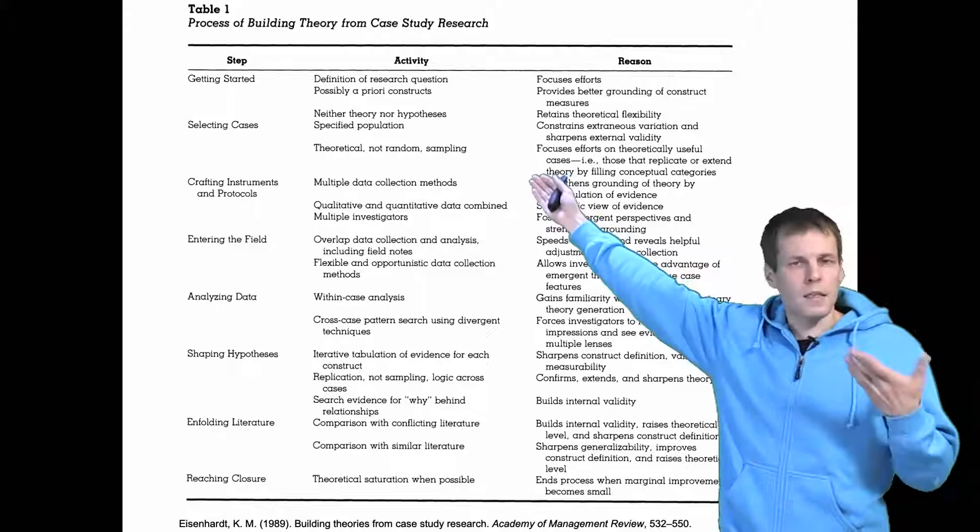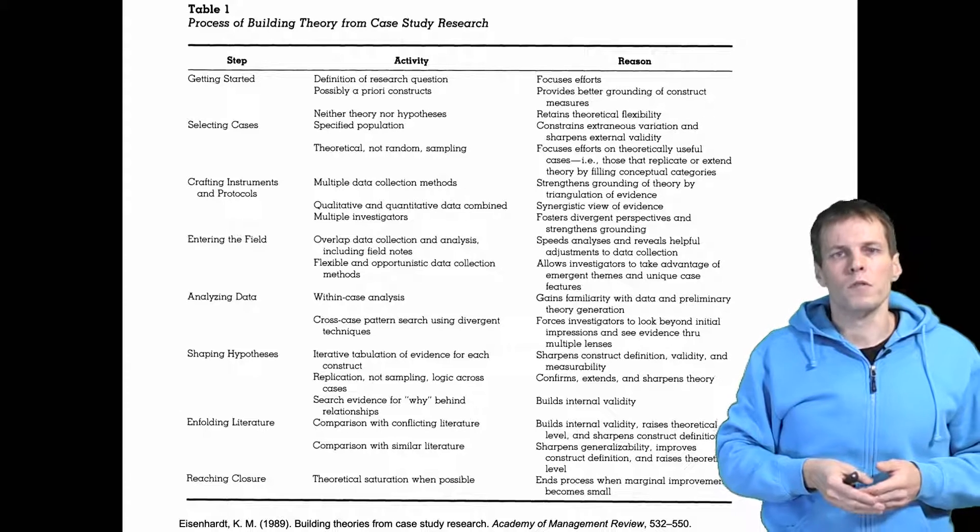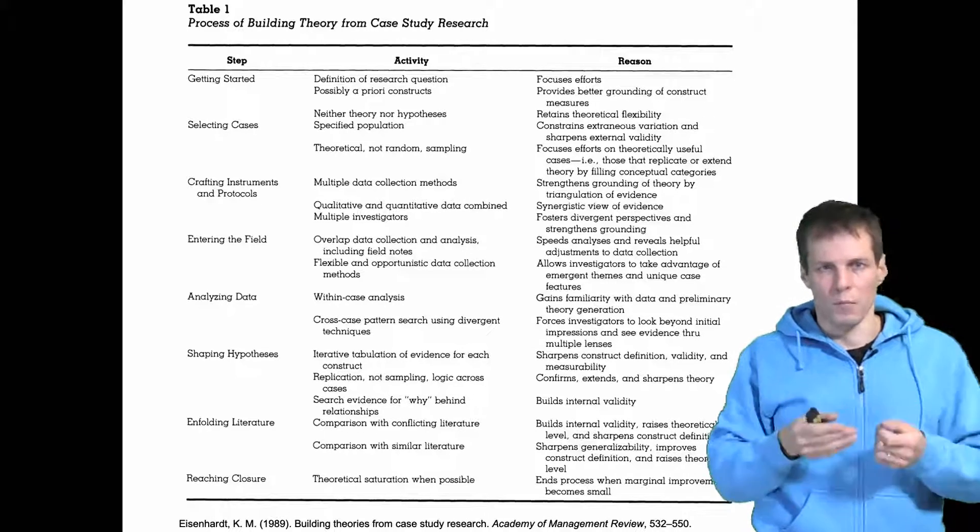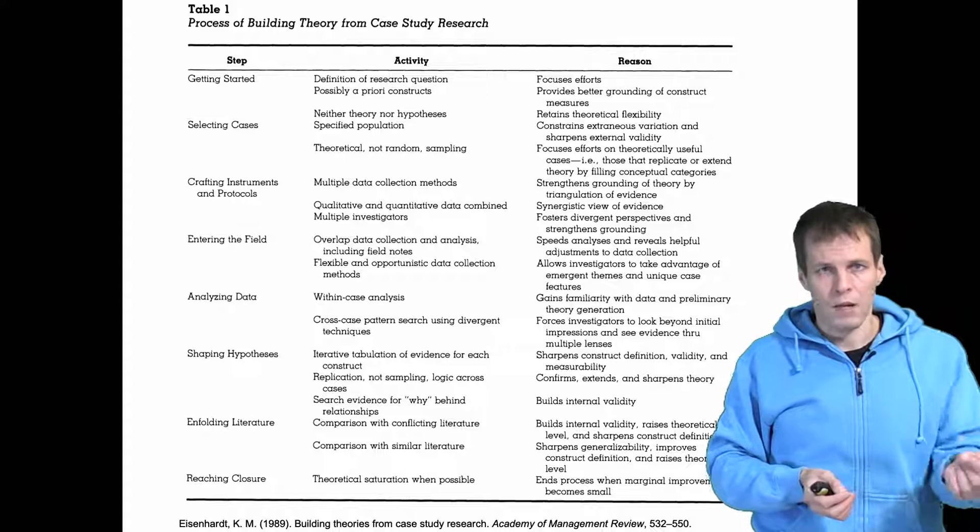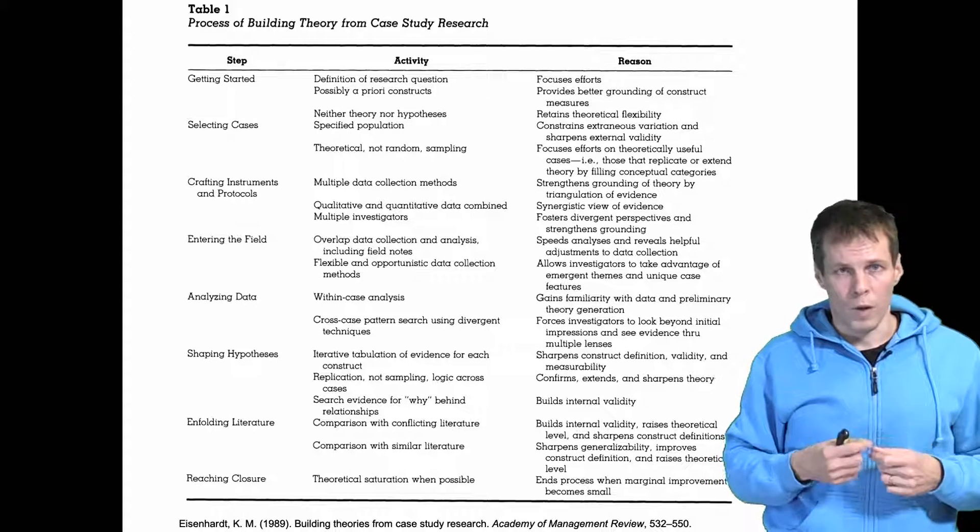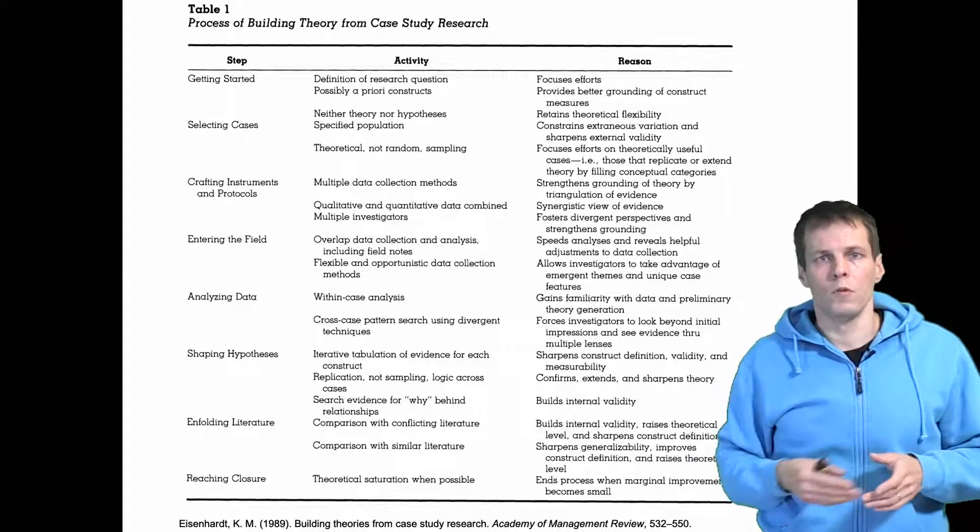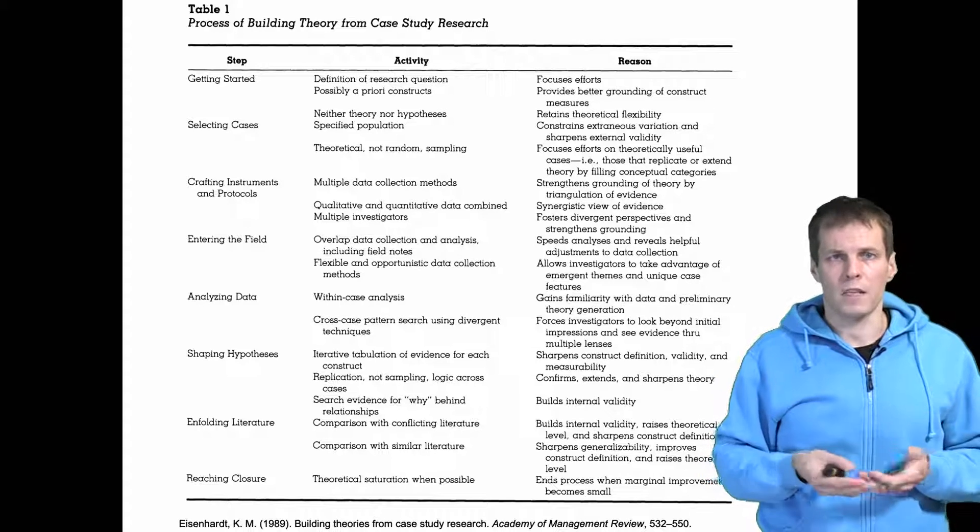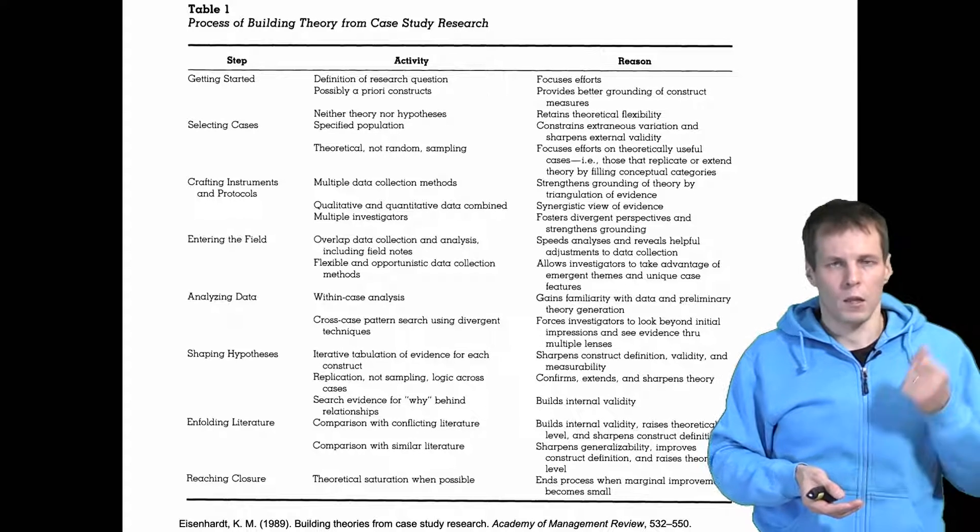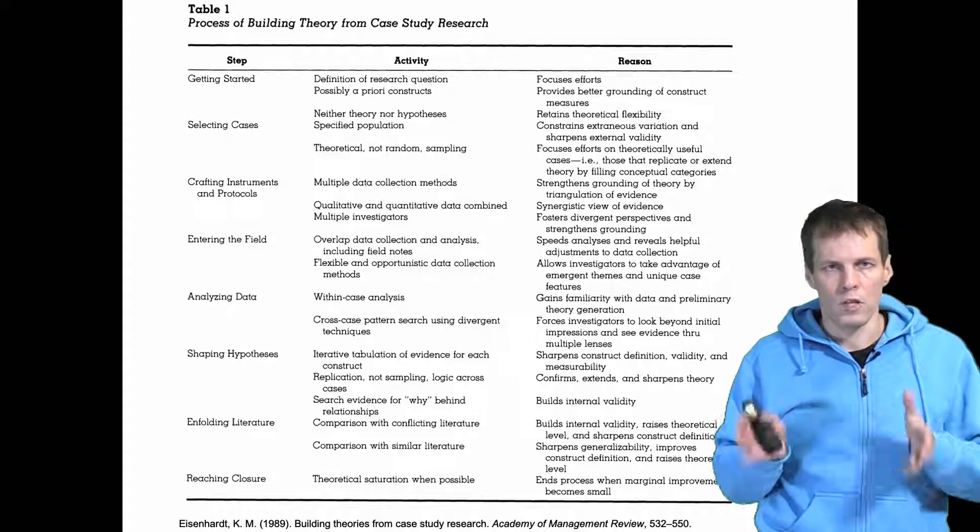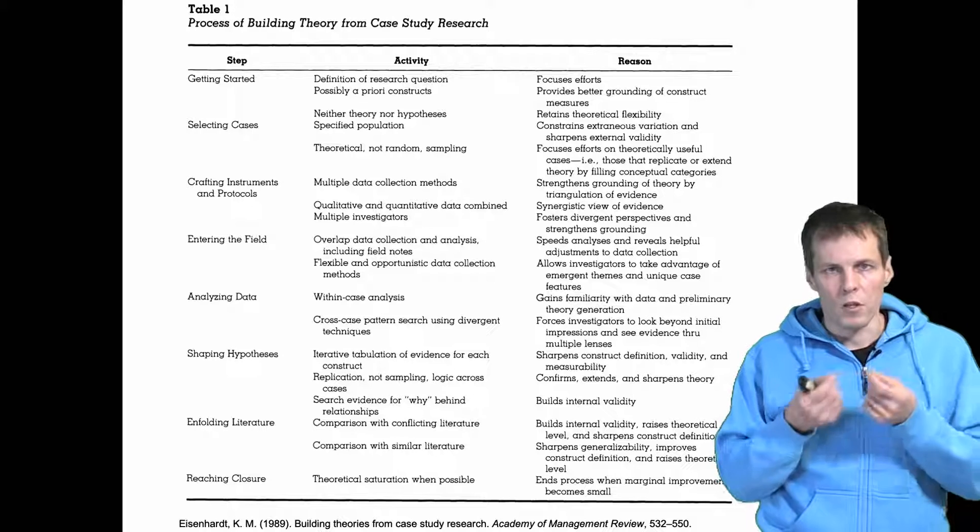Then selecting cases follows theoretical sampling. So if we want to study the effects of power and politics we should get cases where there is variation in power and variation in politics. So if at all possible we should seek companies that we know have centralized power and companies that we know where power is not centralized and we can also do this while we sample. So let's say that we don't know for sure if cases have centralized power or not and let's assume that we have done four cases, three have centralized power and one the power is not centralized. Then in the remaining eight cases we should focus on finding companies where power is not centralized to the CEO.